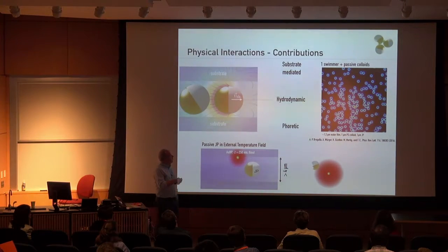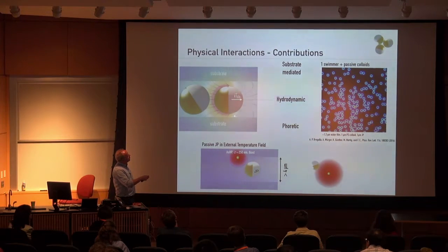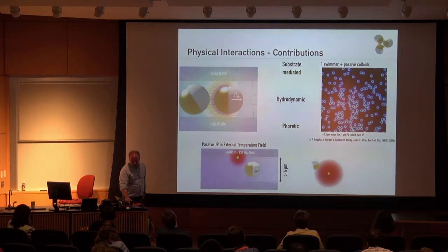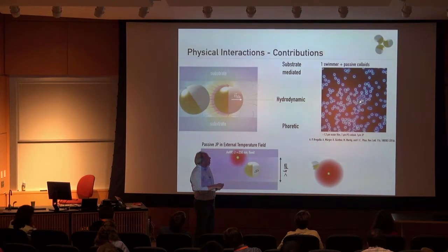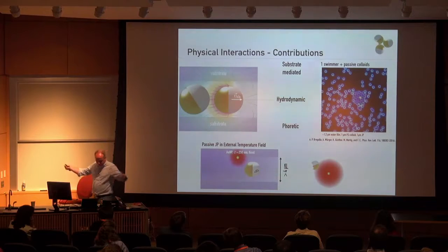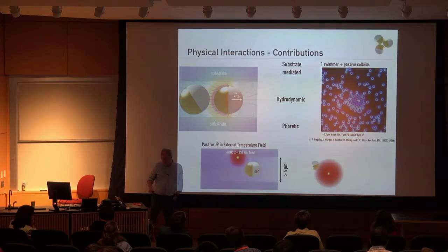I would break the interactions down into three subcategories. The first is a substrate-mediated interaction: whenever you have a gradient on the surface and your swimmer is close to the substrate, you also have a gradient along the substrate, which causes a thermo-osmotic flow along it. You can see this in an experiment — lots of passive colloids with just one active swimmer in the middle — and as soon as the swimmer starts to swim, it collects all the passive particles via this thermo-osmotic flow at the interface.